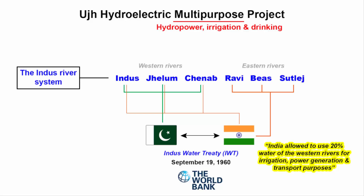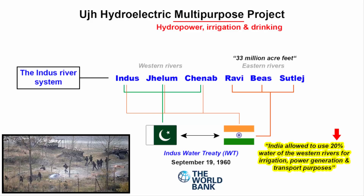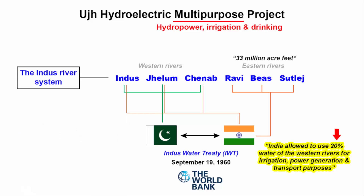India is allowed to use 20% of the water of the western rivers for irrigation, power generation, and transport. Pakistan is not comfortable with the fact that India received the total flow of 33 million acre-feet on the eastern rivers while also sharing the western rivers. So whenever there is conflict — such as the terror attacks on the Indian parliament in 2001, Mumbai in 2008, Uri in 2016, and Pulwama in 2019 — India's response has been to stop its share of water from the eastern rivers. There is also an uproar in India for abolishing the Indus Water Treaty completely as a response to Pakistan's cross-border terrorism.